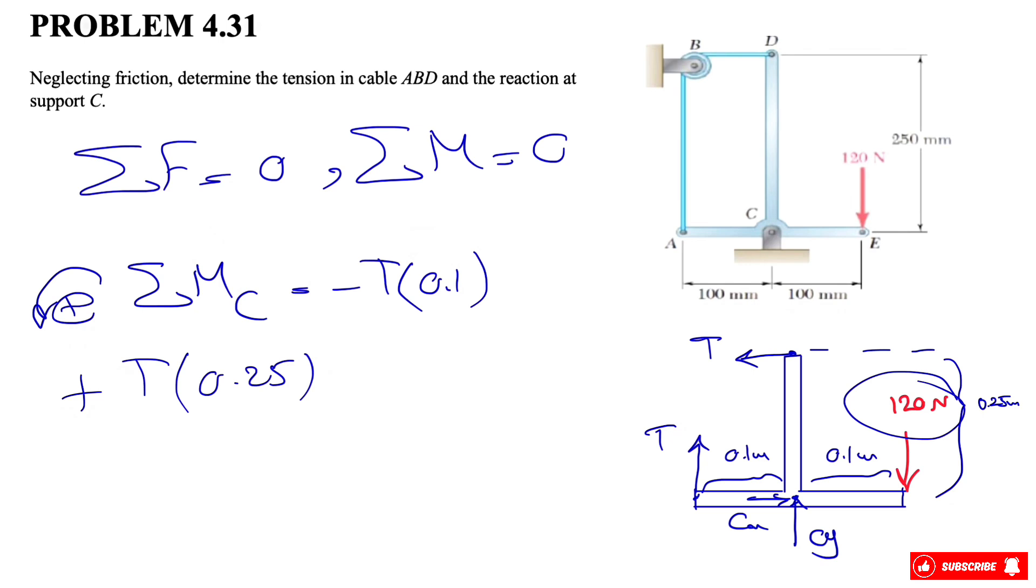We have the 120 newton force at point E which is clockwise, so negative 120 times 0.1 meter equals zero. From here we find our first unknown - the tension in cable ABD is 80 newtons.